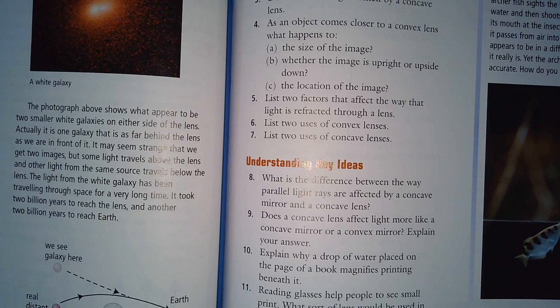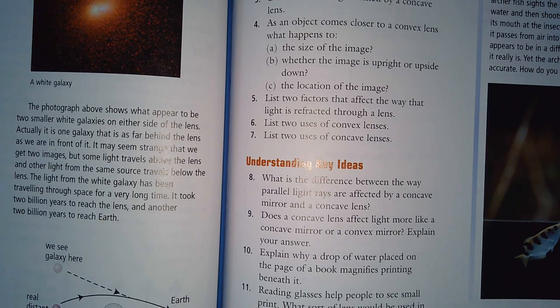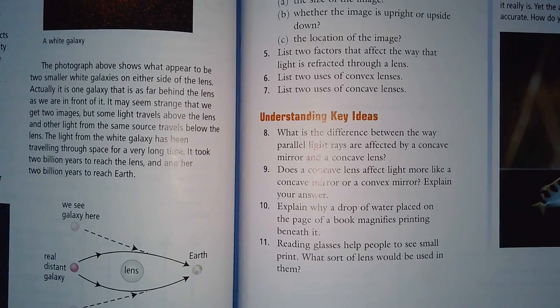Number eight: what is the difference between the way parallel light rays are affected by a concave mirror and a concave lens? Remember, the concave mirror is the one where when you had parallel light rays strike it, the reflected light rays came back and converged. With a concave lens, the rays that are going through end up diverging. That's the difference. Number nine: does a concave lens affect more like a concave mirror or a convex mirror? Concave lens, the light rays diverge. A convex mirror, they also diverge, so that would be the one it acts like.